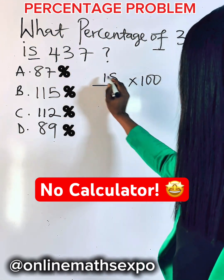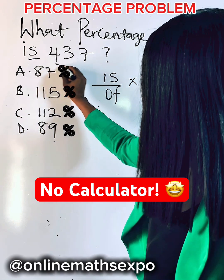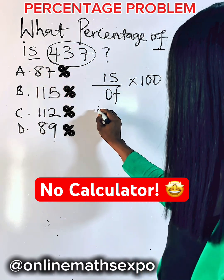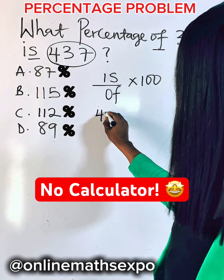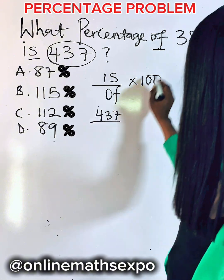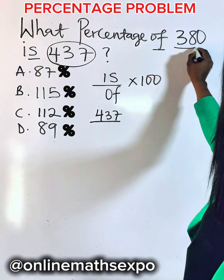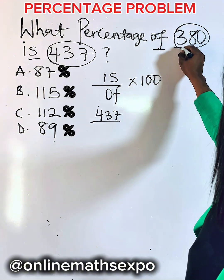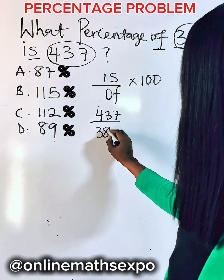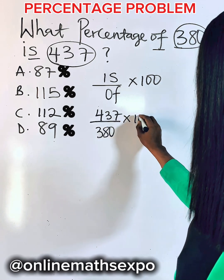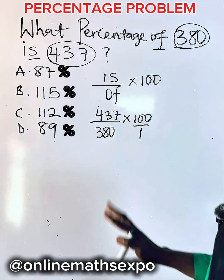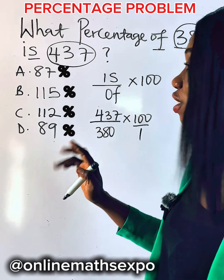So what do I mean by 'is'? You see this number that is after 'is'? You bring it down. Divide it by the number after 'of', which is 380. Multiply your result by 100 divided by 1.